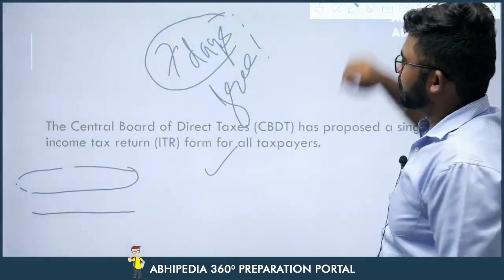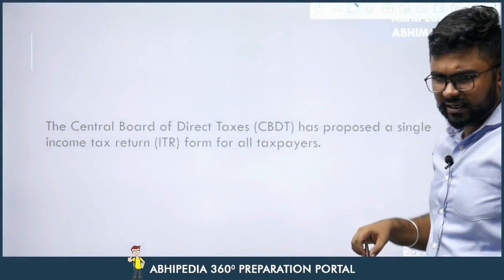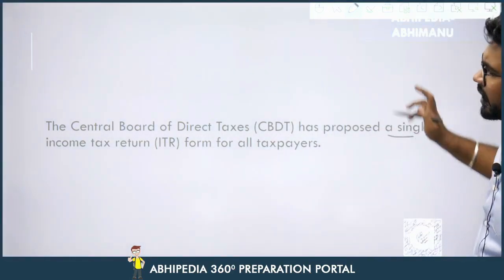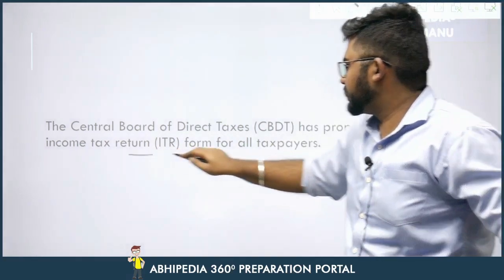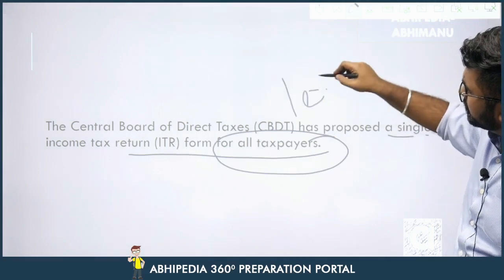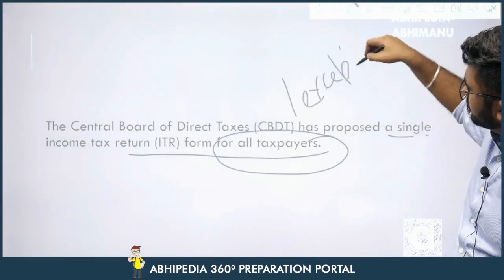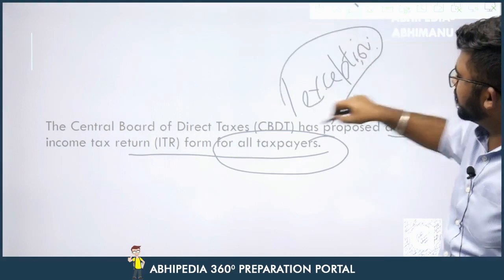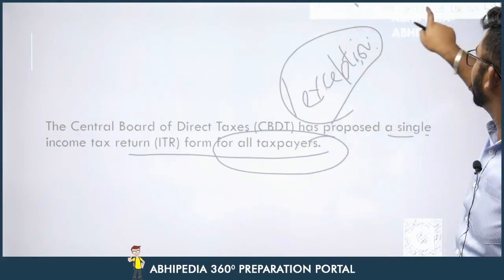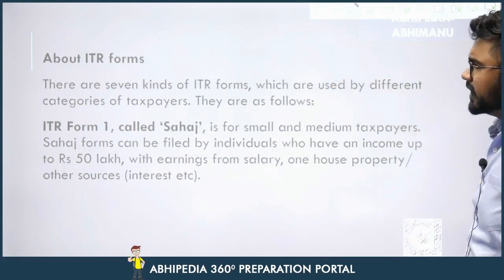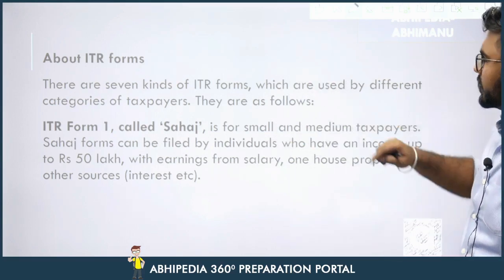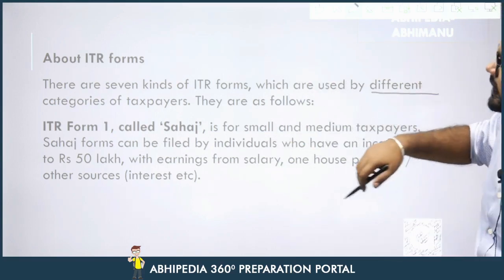Let's move to today's topic. CBDT — Central Board of Direct Taxes — has proposed a single income tax return form for all taxpayers, though there is one exception which we will also see. But first, let us see how many types of ITR forms currently exist. There are seven kinds of ITR forms which are used by different categories of taxpayers.